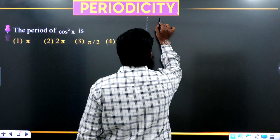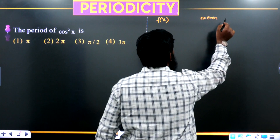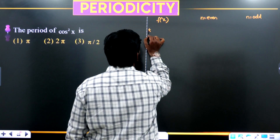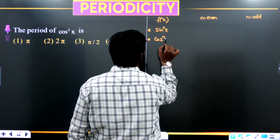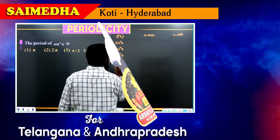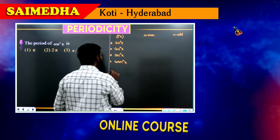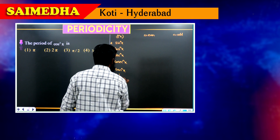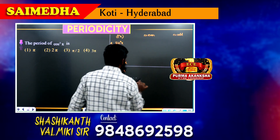The first part we take is a function f(x) where n is even, and next where n is odd. The functions we consider are: sine^n x, cos^n x, secant^n x, cosecant^n x — these four together — and then tan^n x and cot^n x as the last two.